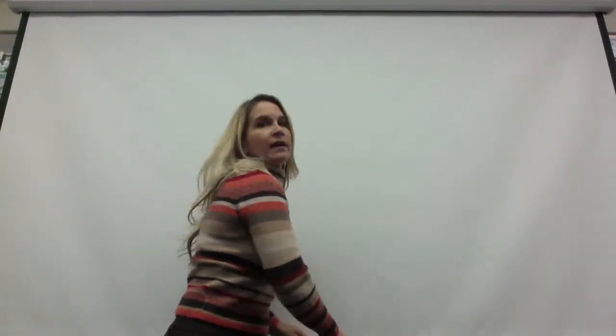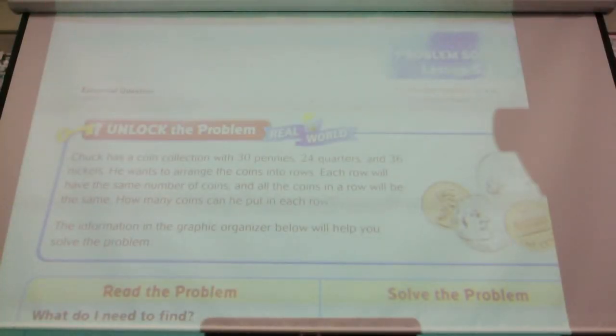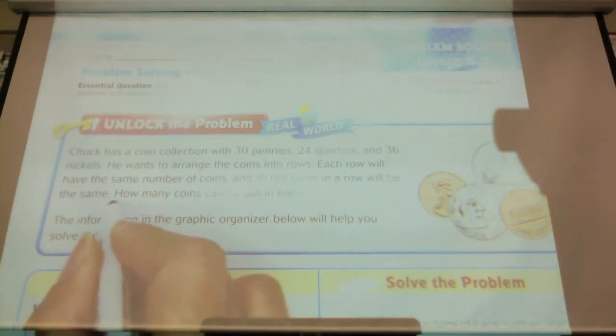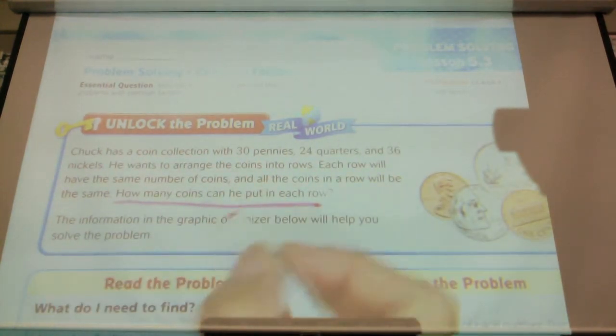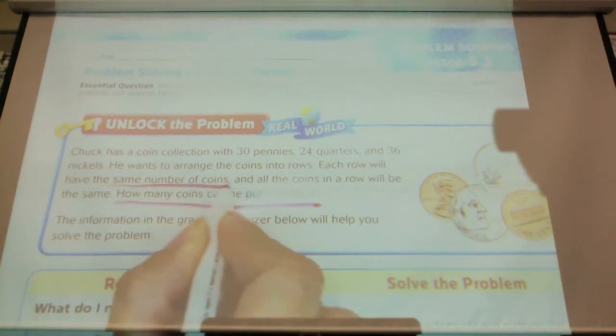Go ahead and open your book if it's not already. Chuck has a coin collection with 30 pennies, 24 quarters, and 36 nickels. He wants to arrange the coins into rows. Each row will have the same number of coins, and all the coins in a row will be the same. How many coins can he put in each row? So he wants to find out. I want you to go back and underline what exactly is he asking. What is the important part of this question that shows what he's asking? Go ahead and take a minute to do that. It's not about value of the money, but it's more how many coins can he put in each row. And he has some rules that he set for that. His rules are that he wants the same number of coins in each row.